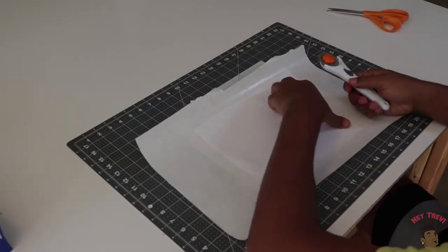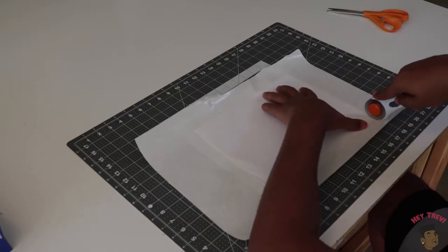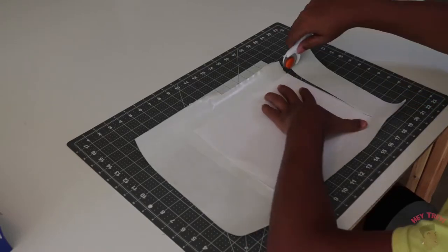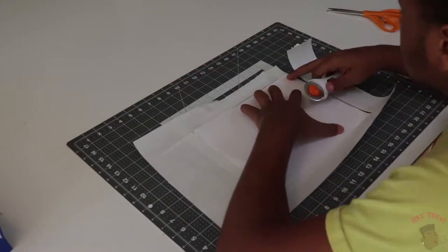For this next step, you can use scissors, but I found that a rotary cutter works best. All I'm doing is just tracing from my computer paper onto the freezer paper.